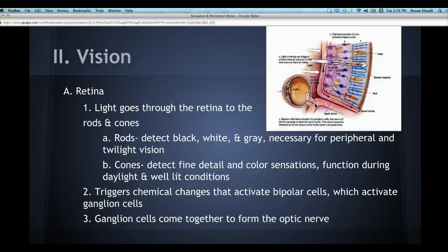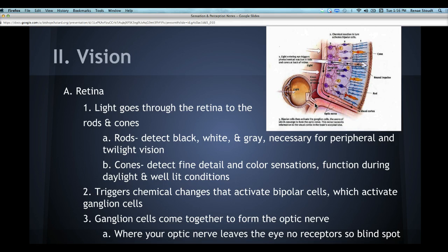Why is that a blind spot? There's no receptors there. You don't have any rods or cones there, so it doesn't take in any information in there. As a result, that's where your blind spot is. Where your optic nerve leaves the eye, there's no receptors, so then you have a blind spot there.